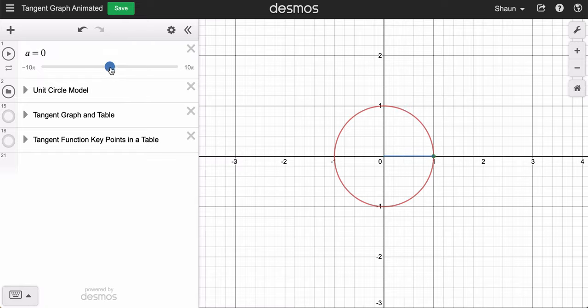In the first quadrant, as we approach π/2 radians, 90 degrees, you can see that green, vertical line, tangent's increasing and approaching positive infinity.